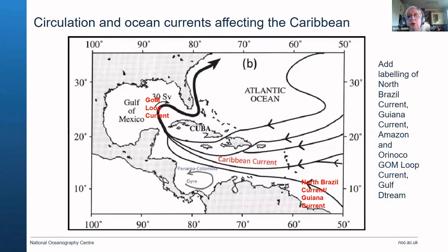This is our pattern of currents for the Caribbean. We can see the North Brazil current and the Guyana current coming in from the southeast and following the coast, then becoming part of the Caribbean current, which in turn becomes part of the Gulf of Mexico loop current, and then exits as the Florida current and eventually back into the Gulf Stream. This is part of a whole ocean basin circulation that is variable in space and time.